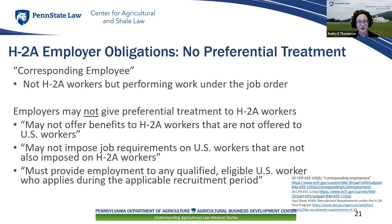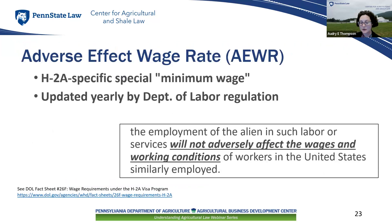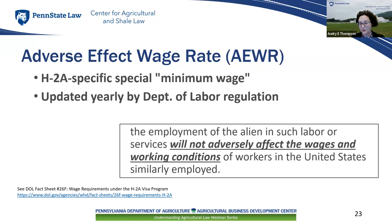As part of recruiting, employers must post their offered rate of pay. If an employer anticipates seeking H-2A workers, that rate must be at least the highest of: the federal or state minimum wage, the prevailing hourly rate or piece rate, any agreed-upon collective bargaining wage, or what's called the adverse effect wage rate (AEWR). Going back to the statutory language, the employment of an alien cannot adversely affect wages and working conditions. The AEWR is basically a special minimum wage for the H-2A program to ensure that workers brought in do not adversely affect the wages and working conditions of similarly employed U.S. workers. It is updated yearly by the Department of Labor through regulation.